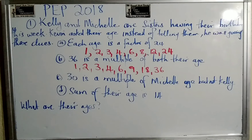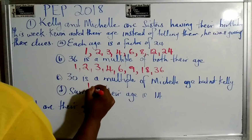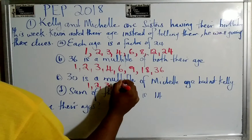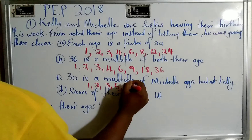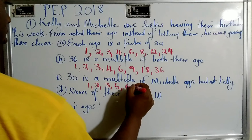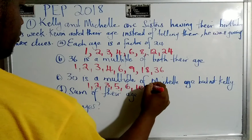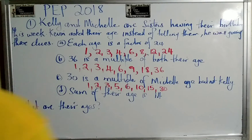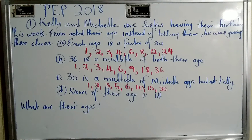It says 30 is a multiple of Michelle's age but not Kelly's. That is very tricky. So the numbers you can multiply to get 30 are: 3, 5, 6, 10, 15.